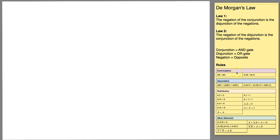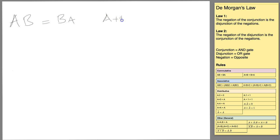The first one is the commutative law: A·B is the same as B·A, and A OR B is the same as B OR A. So A AND B is the same as B AND A — that's the same as in common algebra.